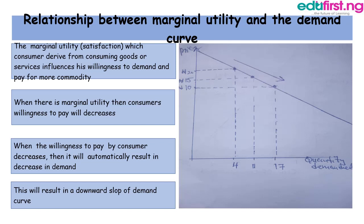How is marginal utility affecting the demand curve? The marginal utility which a consumer derives from consuming goods or services influences his willingness to demand and pay for more of that commodity. As marginal utility decreases, the consumer's willingness to pay will also decrease. When the willingness to pay decreases, it automatically results in a decrease in demand, which directly affects the demand curve, causing it to slope downward.